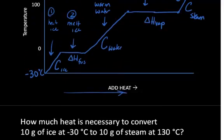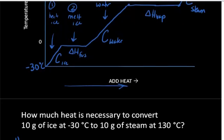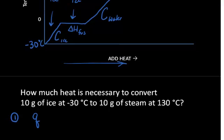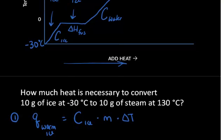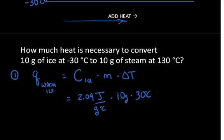So how much heat is necessary to convert 10 grams of ice at negative 30 degrees Celsius to 10 grams of steam? We can use a heating curve to keep track of all the different calculations. For step one — heating the ice — the heat equals the specific heat of ice times mass times change in temperature. The specific heat of ice is 2.09 joules per gram per degree Celsius, the mass is 10 grams, and the change in temperature is 30 degrees Celsius. That gives us 627 joules.